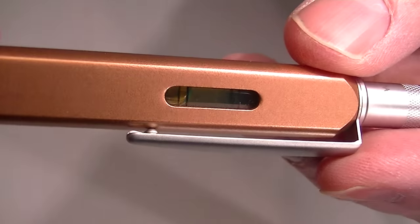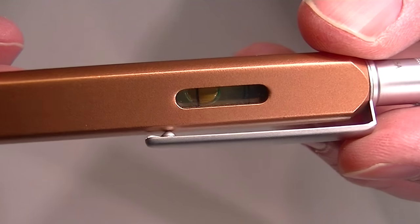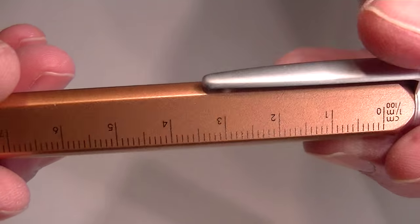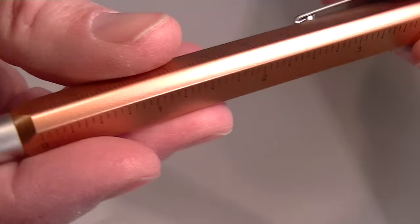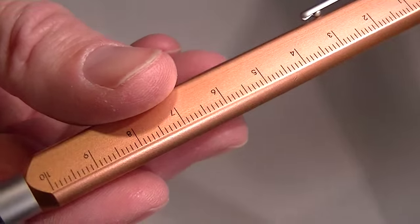It has a bubble level. You can see the little bubble inside so you can see if your table or desk is level. It also comes with a metric and an inch scale on the sides of the ballpoint pen.